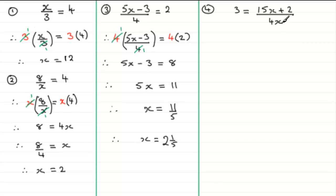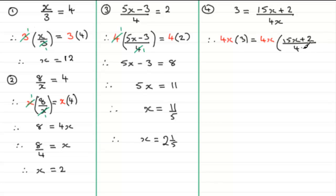We need to get rid of the fraction in the denominator — the 4x — so we multiply both sides by 4x. On the left we get 4x times 3, which is 12x. On the right the 4x cancels, leaving 15x plus 2. So we have 12x equals 15x plus 2.